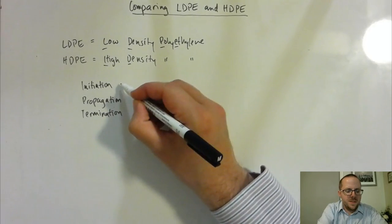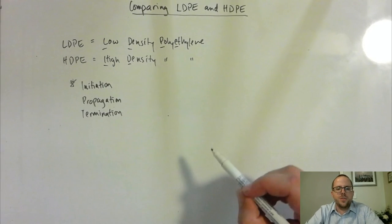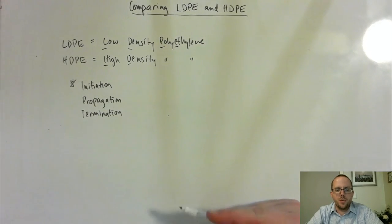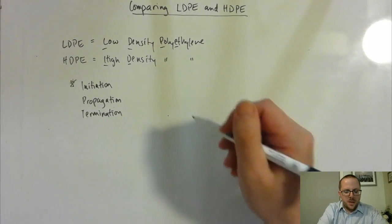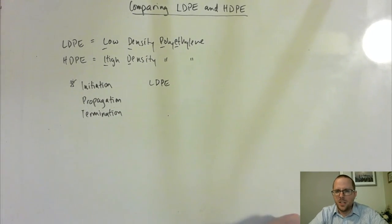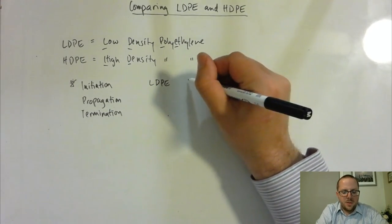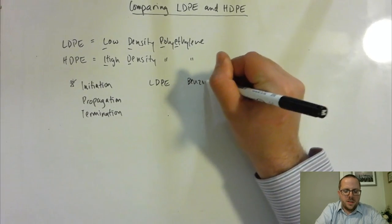Now, the difference in this first step is what serves to cause a difference between these two polymers. We'll talk about LDPE first. The steps that we've talked about in the previous video actually are largely applying to LDPE, and not HDPE. So we have a benzoyl peroxide radical.